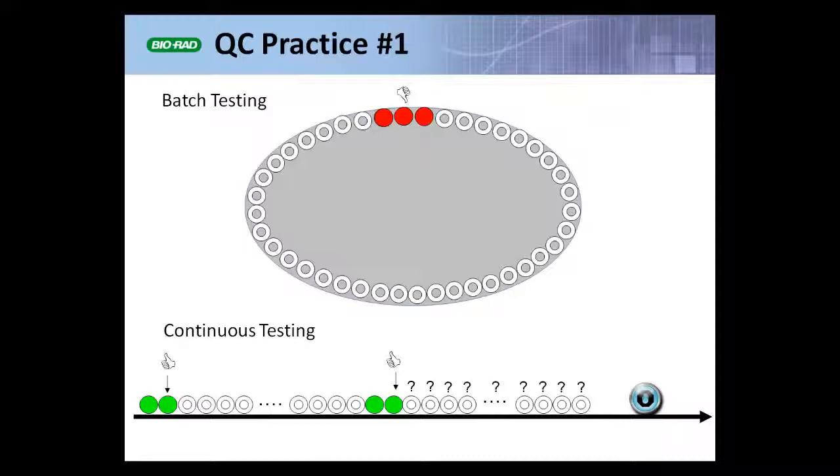Or maybe I've reached a point where I'm going to do preventive maintenance or a scheduled calibration—some event that might change the state of my testing process. If I don't test quality control specimens after the last patient result but before that stopping point, then I can't guarantee that something hasn't gone wrong that's adversely affected all the patient results produced since the last acceptable QC event.